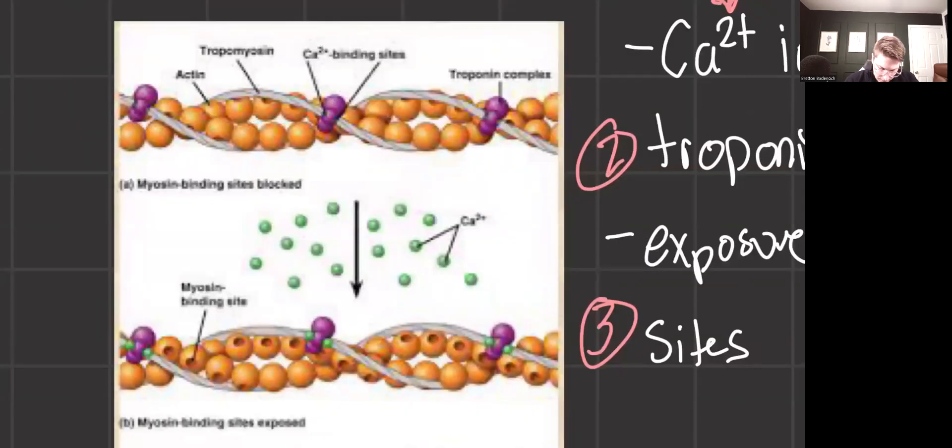We can see that visually in this picture, where we've got actin as the orange beads, the white rope is tropomyosin, calcium binding sites are on the purple spots, and troponin itself is the tri-purple thing here.